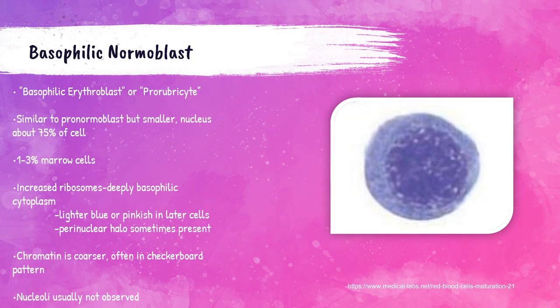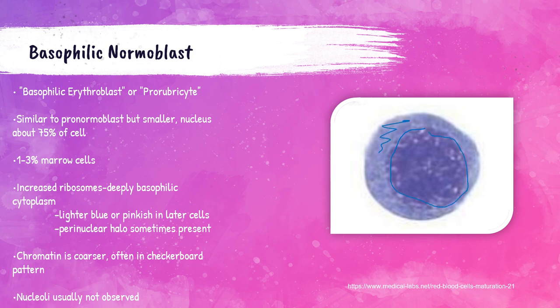The next stage of red blood cell maturation is the basophilic normoblast, also referred to as a basophilic erythroblast or prorubricyte. They are very similar to the pronormoblasts but are smaller, and the nucleus takes up about 75% of the entire cell. These cells account for about 1 to 3% of the total number of cells in the bone marrow. Nucleoli are generally not observed, but up to one may be present. They are about 16 micrometers in size, and the cytoplasm is less blue than that of the pronormoblast.